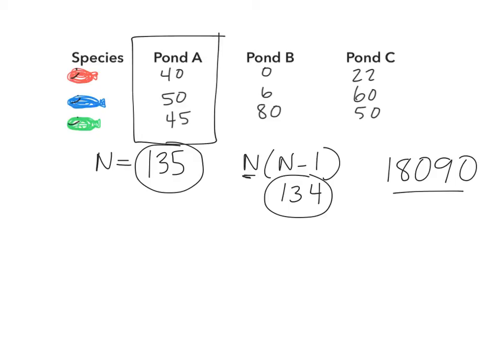For the bottom of the equation, we need to find the little n values. The little n values are the number of individuals of each species. So the little n value for the red fish is 40. The little n value for the blue fish is 50. And the little n value of the green fish is 45.